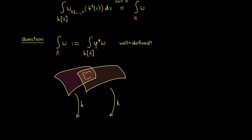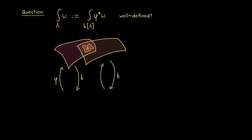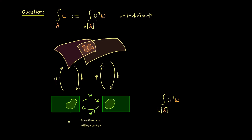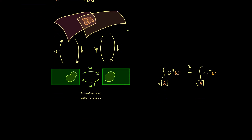We take one open set u and another one, with two charts h and k. This is a situation we have to consider if the subset a lies in the intersection, because then we have two possibilities to describe the integral. Let's also look at the two parameterizations phi and psi — these are simply the inverses of the charts. We also find the images of the set a, and therefore we find a very nice diffeomorphism in R^n, which we call a transition map — let's denote it by w. So on the left-hand side we find the integral of phi star omega, and on the right-hand side the integral of psi star omega over the image of a under k. The question is: do we really have equality here? If we can show that, then the integral of omega is well defined.